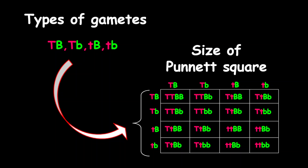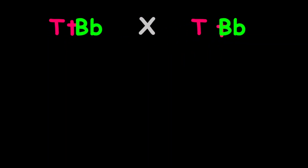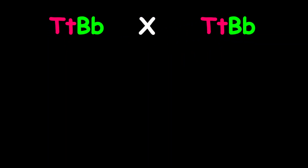Hello everyone, I hope you're doing great. Today we are exploring dihybrid crossing and looking at the different types of gametes that can be formed from a specific genotype, and also the possible size of a Punnett Square based upon the number of gametes. For our first example, we're looking at two parents that are heterozygous for two different traits, and we're going to determine the possible gametes first.